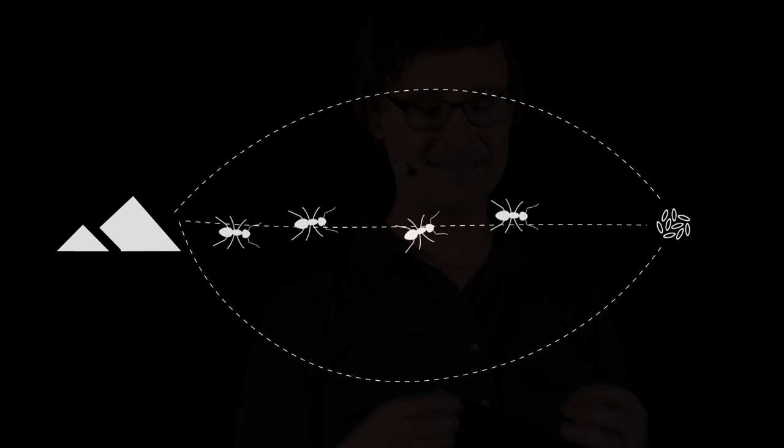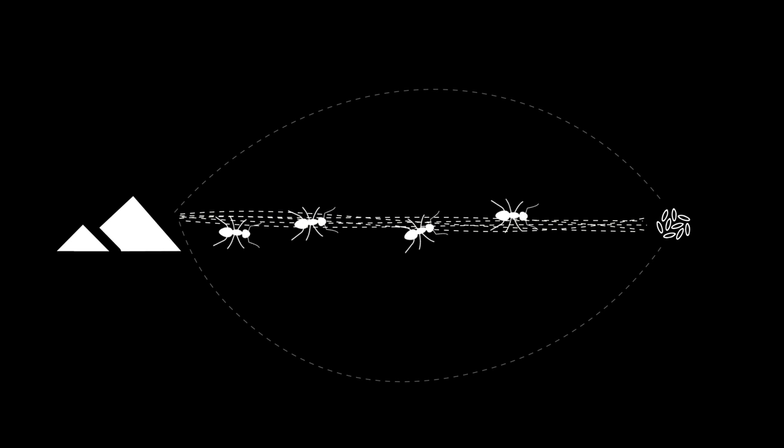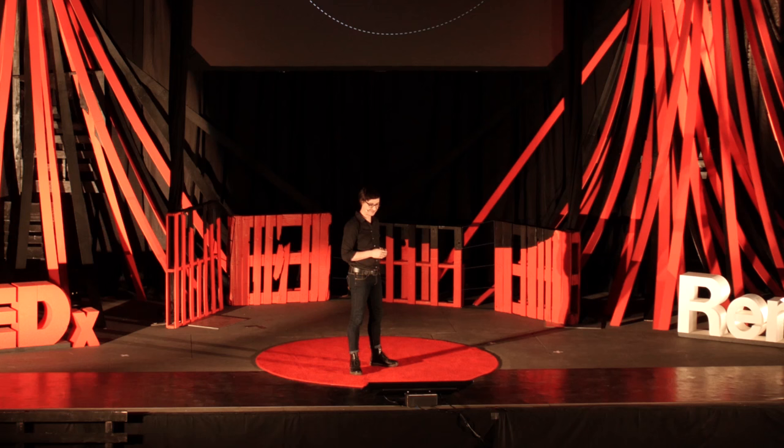What's really fascinating is that this kind of behavior allows colonies to actually solve very challenging problems together, like finding the shortest path between the colony and food. No one ant decided what the right way to go was, but they all together, through the beauty of systems theory, emerged with the most optimal answer — no central authority required.